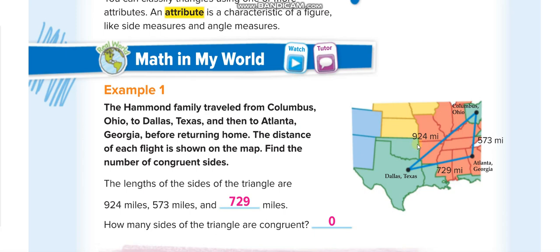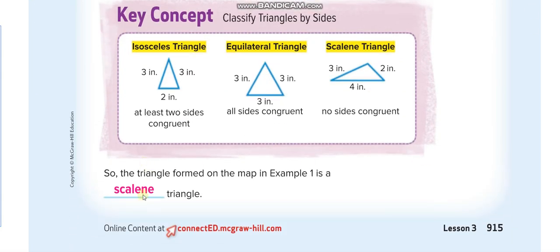Let's solve the first example. The triangle has sides of 924, 573, and 729 miles. You can see all sides are of different lengths, so how many sides are congruent? Zero. So this triangle is a scalene triangle — no side is of the same length.